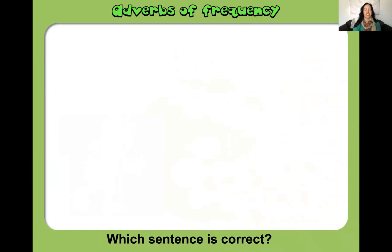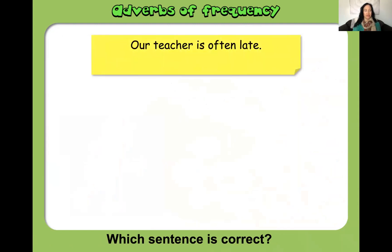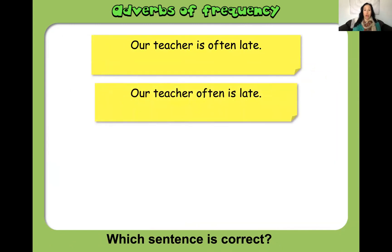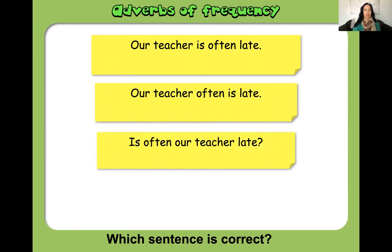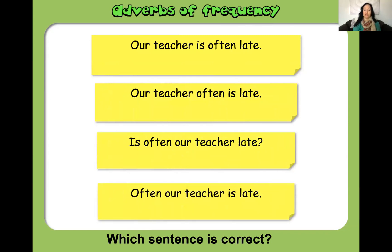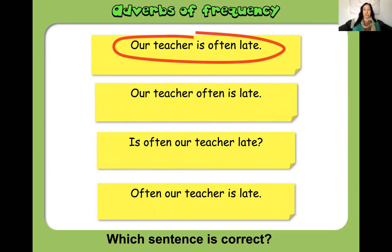Which sentence is correct? Remember your word order. Is it 'Our teacher is often late', 'Our teacher often is late', 'Is often our teacher late', or 'Often our teacher is late'? Time's up. The answer is 'Our teacher is often late.' If you didn't get this one, you can always pause and rewind to review the word order.